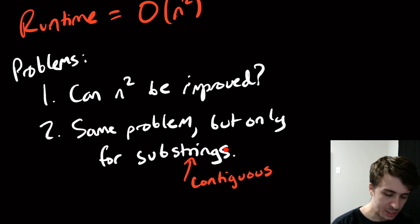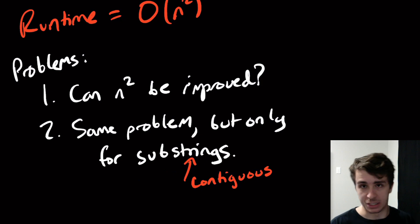So subsequences can be any subset of the array. Substrings have to be contiguous, or we can think of contiguous subsequence as the exact same thing. So can we get better than n squared?